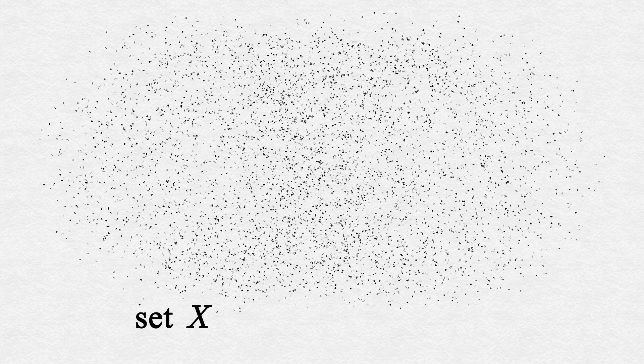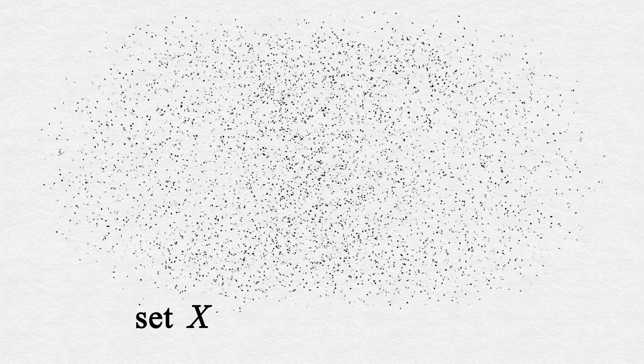We can add mathematical structures to a set X to make it into something more. To give a set a sense of shape, we can introduce a concept of distance, so that elements aren't restricted to just being equal or not equal. They can be closer to one another or farther away.